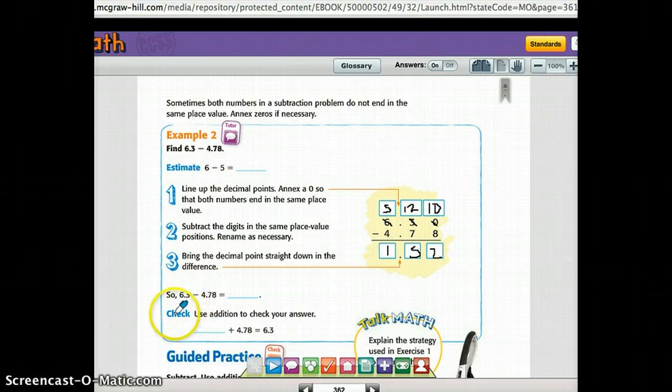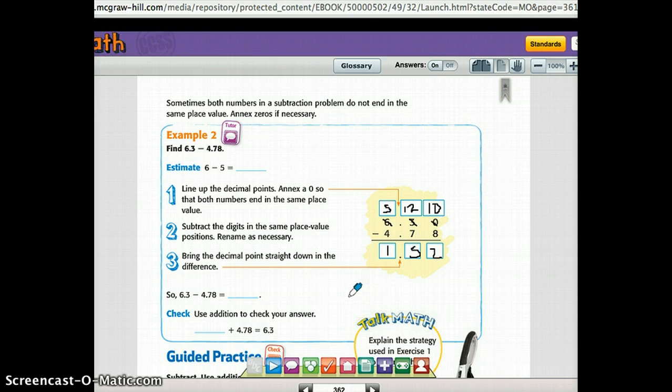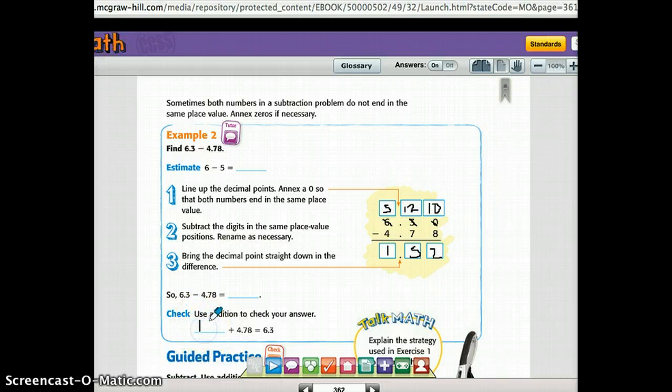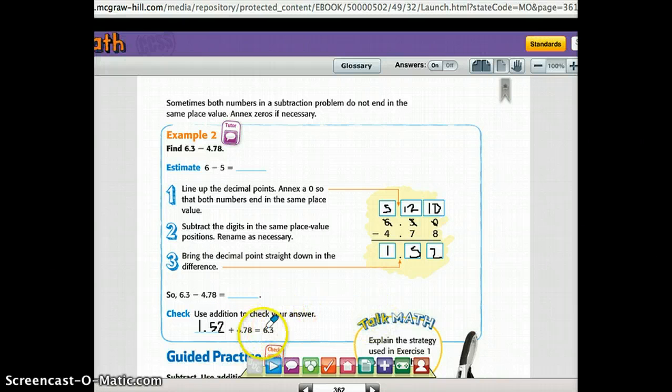Here's an important step, though. Check. So you can use addition, which is the inverse operation. So remember how in division we used multiplication to check our answers? Because that's the inverse. Well, in subtraction, addition is the inverse. So we can check it by doing our difference that we got. 1 and 52 hundredths plus 4 and 78 hundredths. You would line those up like we already learned about adding decimals and see if you get 6 and 3 tenths. And if you do, that means that you are correct.